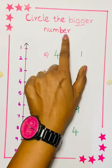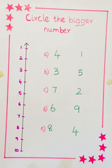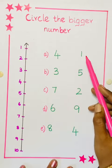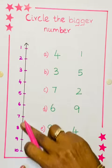Circle the bigger number. See the first number 4, 1. How to find the bigger number? See this number line.